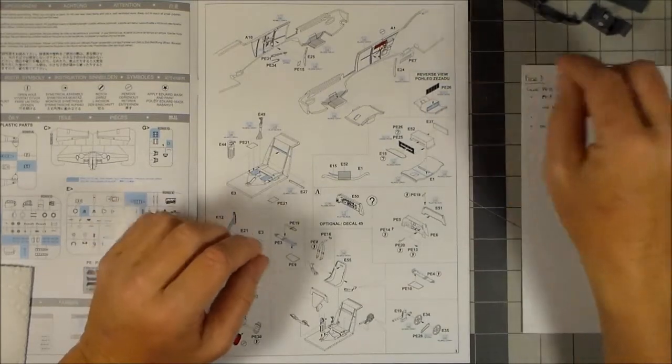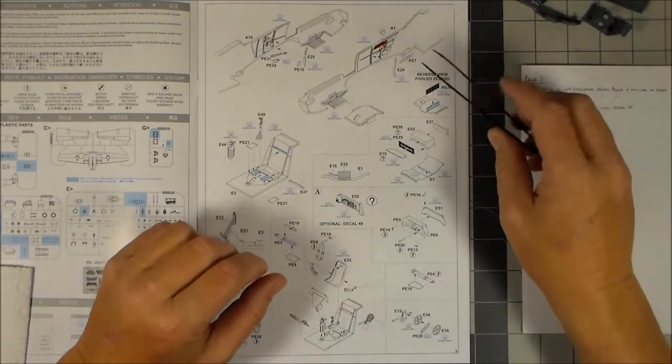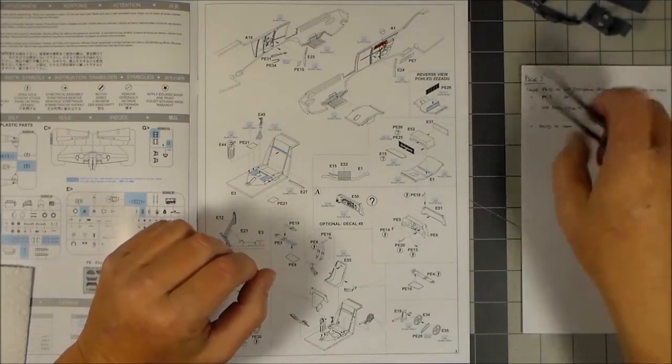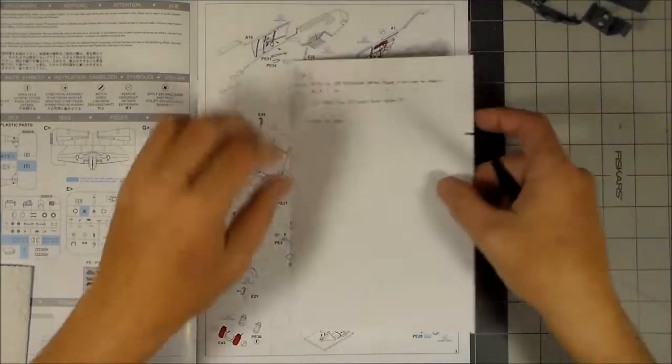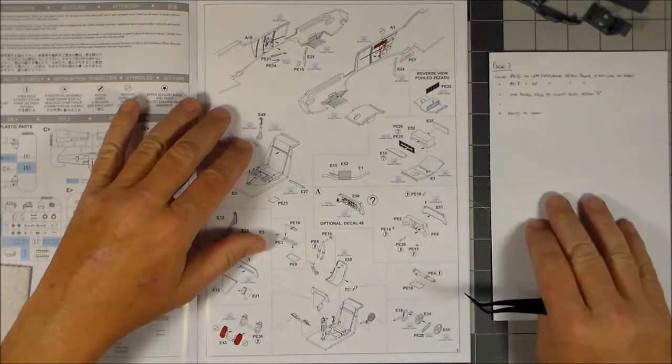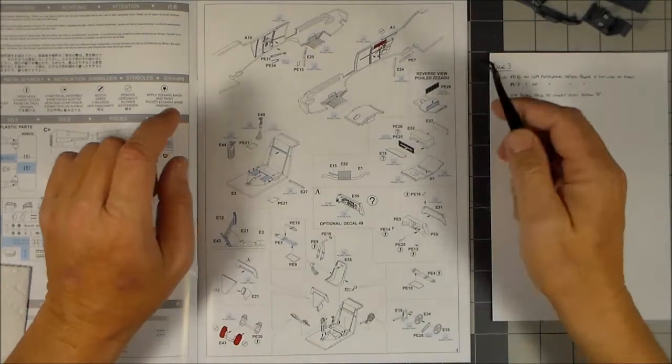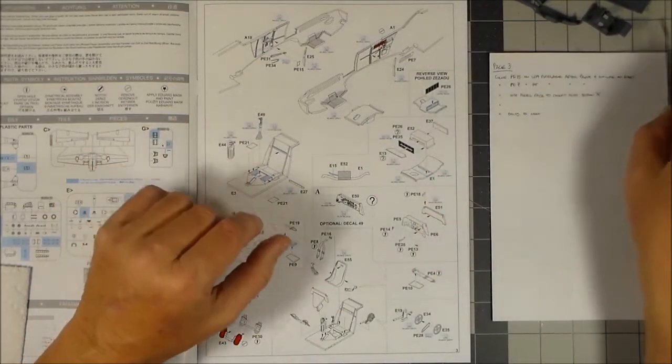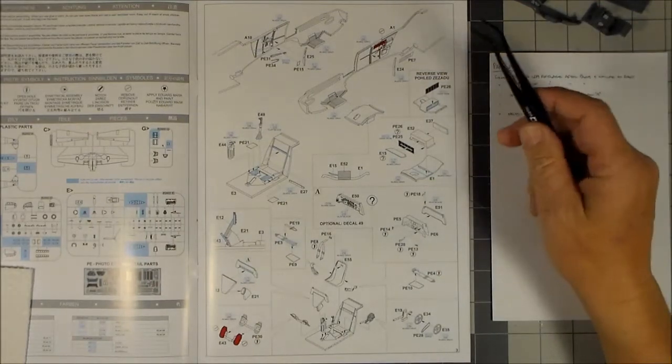It needs to be painted before some of the photo etch parts are installed. So what I did is I made myself some notations here so I don't forget to do anything on what needs to be completed once the painting is done.